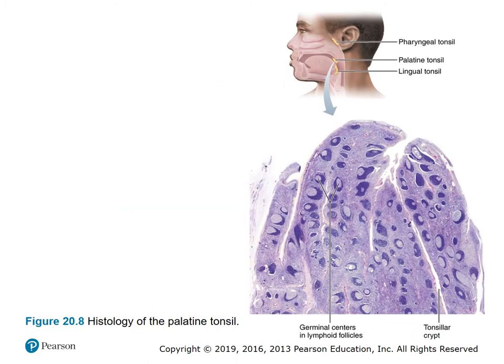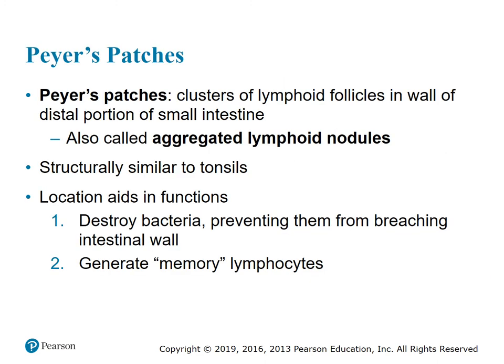Figure 20.8 shows the histology of the palatine tonsil — its location, the germinal centers in lymphoid follicles, and tonsillar crypts. Peyer's patches are clusters of lymphoid follicles in the wall of the distal portion of the small intestine, i.e., the ileum. They are also called aggregated lymphoid nodules and are structurally similar to the tonsils. They are strategically located: their location helps in destroying bacteria, preventing them from breaching the intestinal wall, and generating memory lymphocytes.